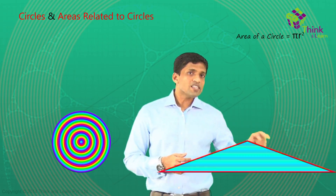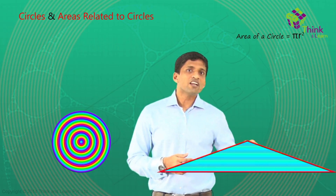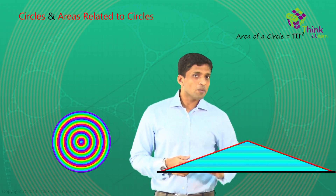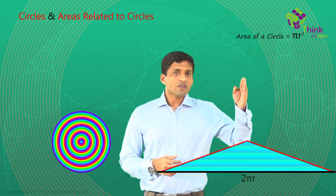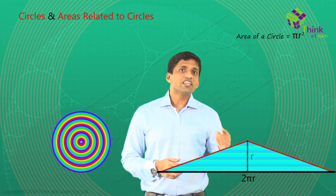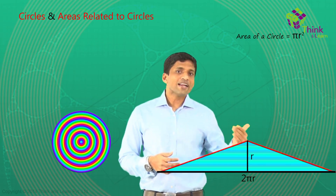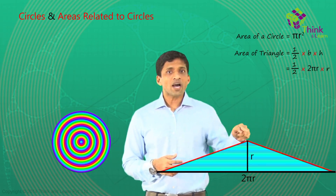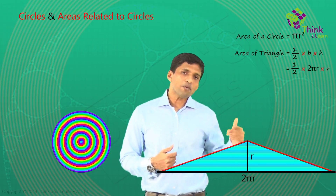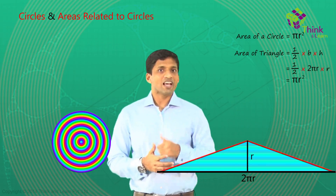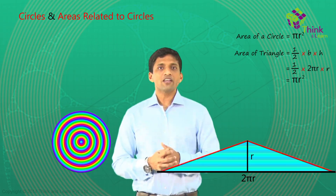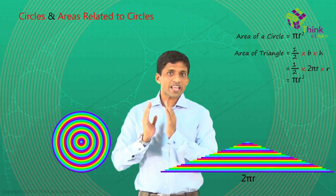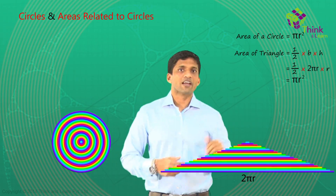So, what is the area of the triangle here? The base here is 2πR, and the height here is R. So we can directly write down: half into 2πR into R, which is nothing but πR square. Very easy and interesting, right? This way we can visualize area of a circle using a triangle.